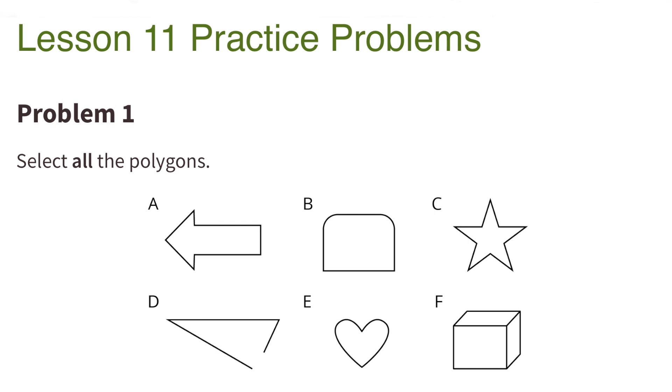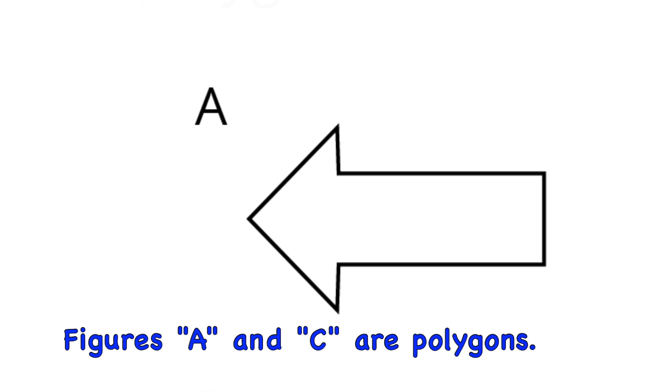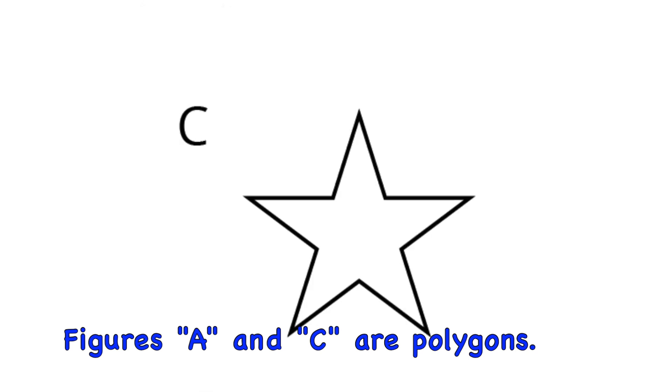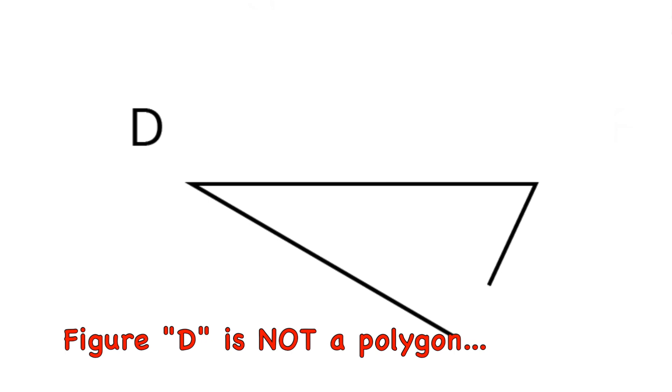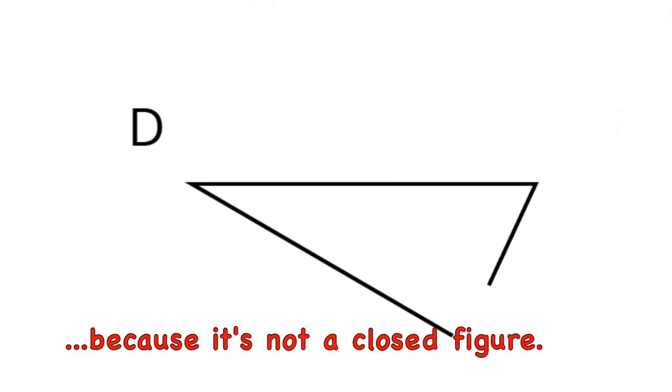Unit 1 Lesson 11: Polygons. Number 1. Select all the polygons. Figures A and C are polygons. Figure B is not, because of the curved sides. Figure D is not a polygon, because it is not a closed figure.